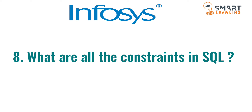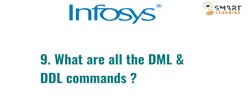The next question is: what are all the constraints in SQL? We have constraints like primary key, foreign key, unique, default, and some others — totally seven constraints. Be prepared with each and every constraint as they are very important. The next question is about DML and DDL commands. DML commands include INSERT, UPDATE, and DELETE. DDL commands include CREATE, DROP, ALTER, and TRUNCATE.